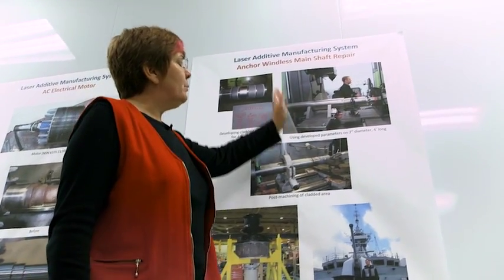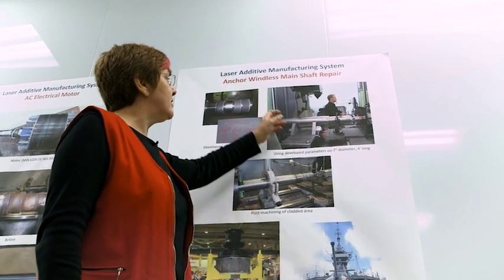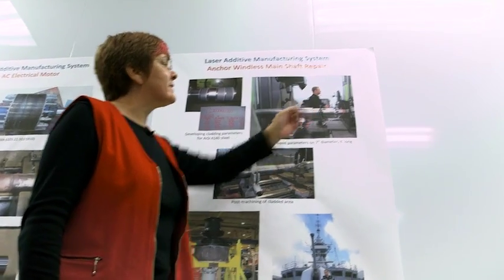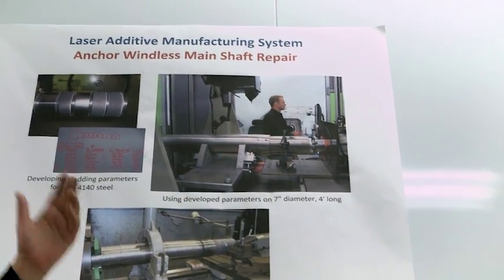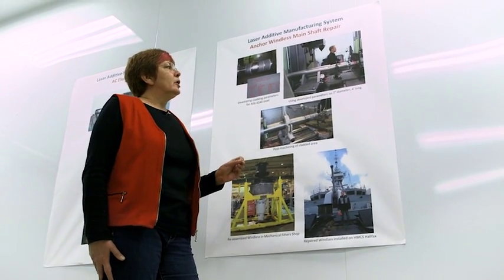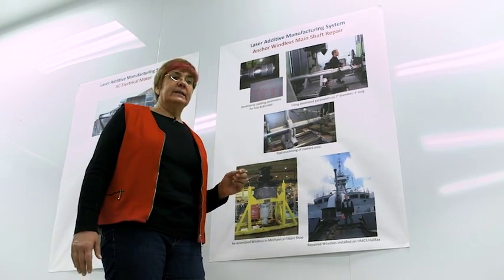So what we did is we built some rigging and we put the Halifax capstan shaft into our machine and we increased the size of it by laser cladding it with a 4140 steel. This is a big chunk of material. You are not going to the metal stores and buying something like this.